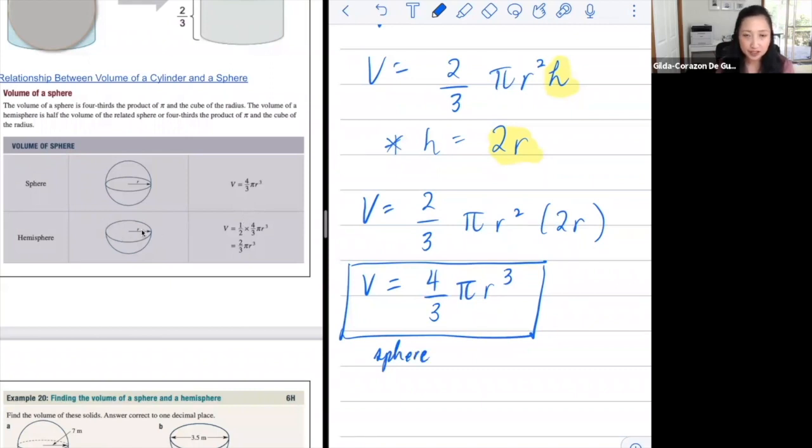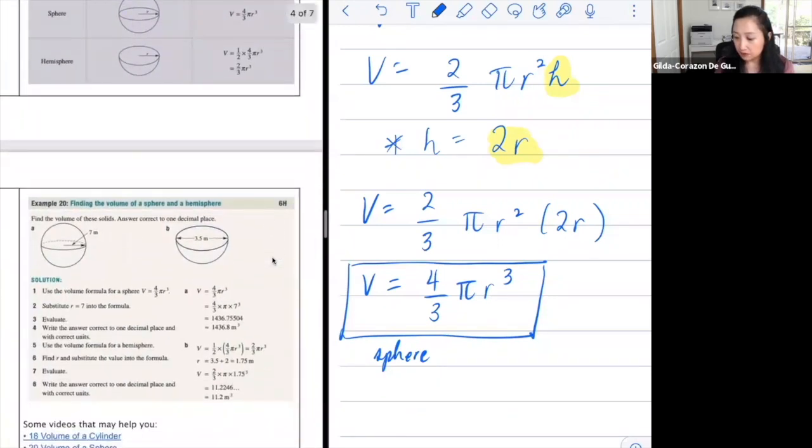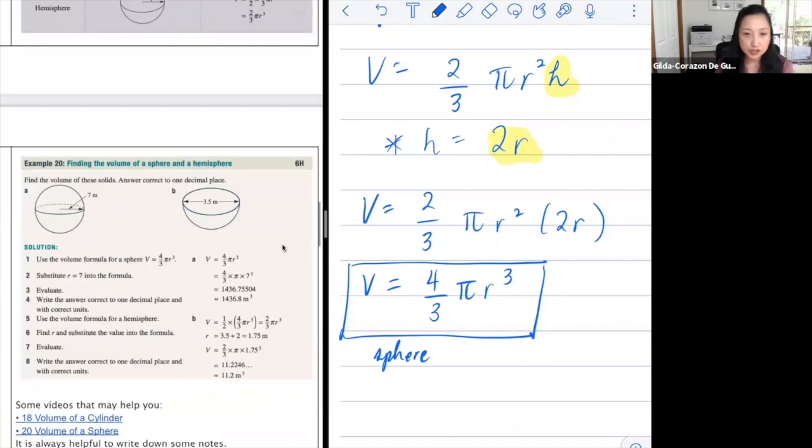If it's a hemisphere, then you would just need to have to halve it. So if you halve four-thirds, then that would just become two-thirds pi r cubed for the volume. And pretty much, it's straightforward. Just replace your radius. Seven meters is the radius. Replace that and use your calculator to find the volume of that sphere.